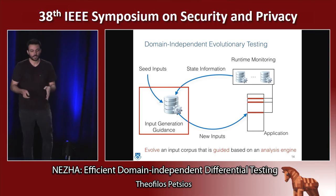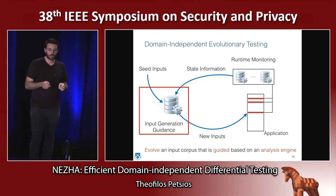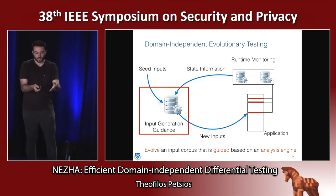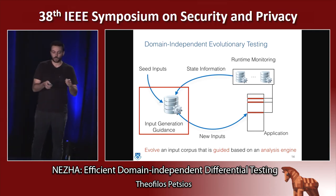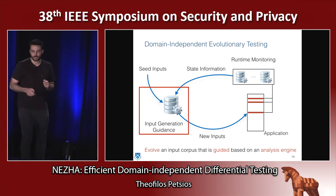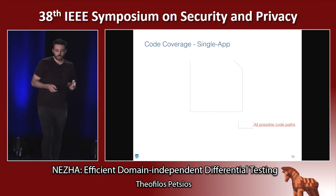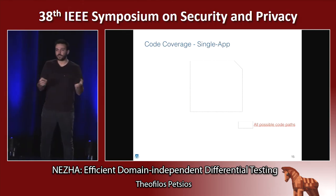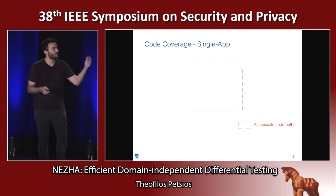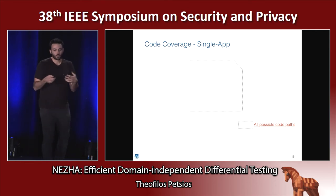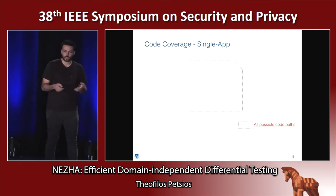If we wanted to come up with a differential testing framework that is generic, we should focus on this input generation guidance. But how does this guidance engine actually come up with interesting inputs? To give an example, let's think about a well-known case study: the way code coverage is used in modern fuzzers.